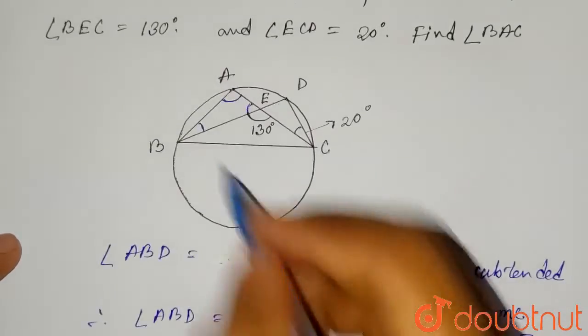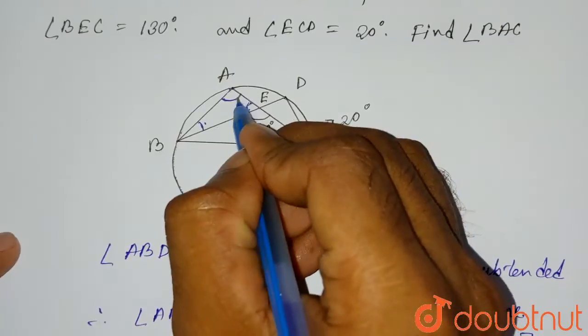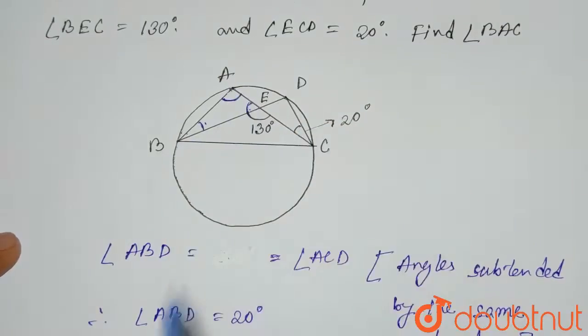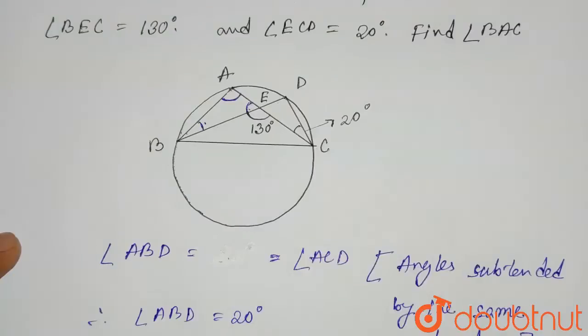So this angle ABD is 20 degrees, and angle AEB is 50 degrees. The remaining angle to find is angle BAE, or you can say angle BAC.